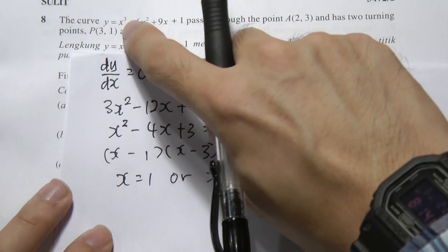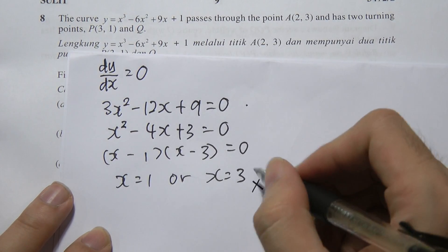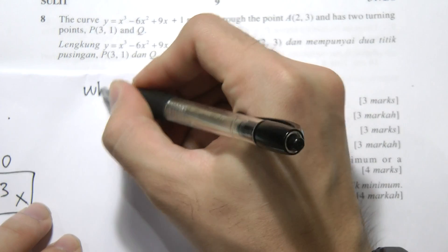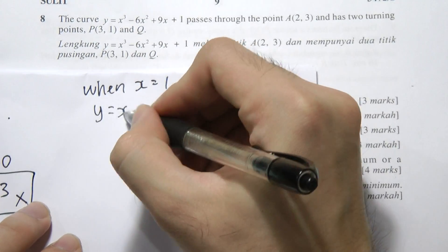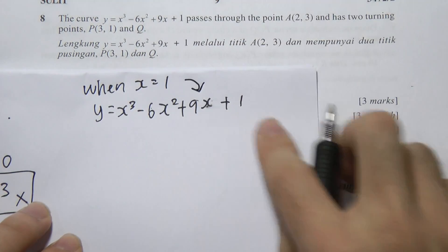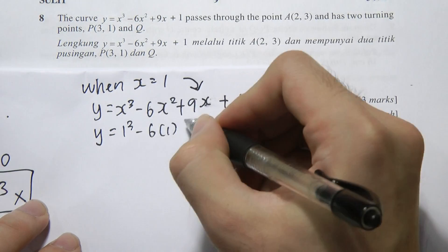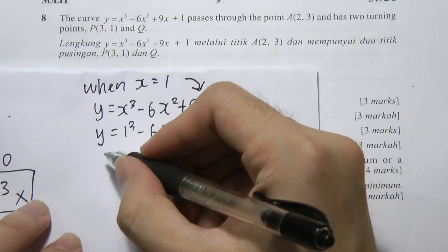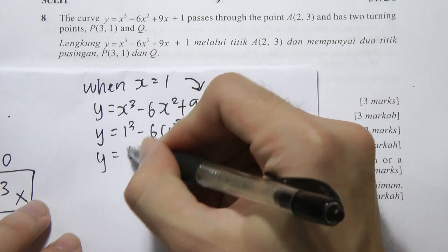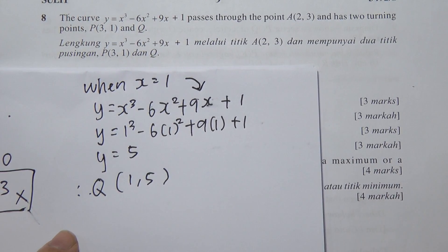Substituting x = 1 into y = x³ - 6x² + 9x + 1: y = 1 - 6 + 9 + 1 = 5. Therefore the coordinates of Q are (1, 5).